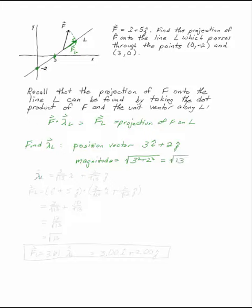So lambda L, this is our unit vector in the direction of L, is 3 over the square root of 13 i plus 2 over the square root of 13 j.